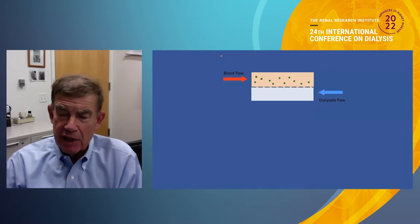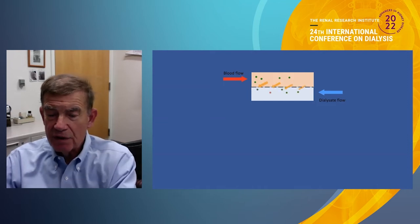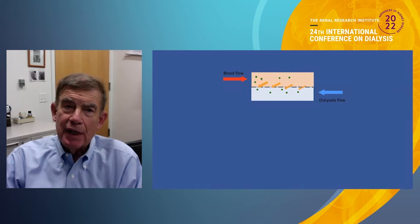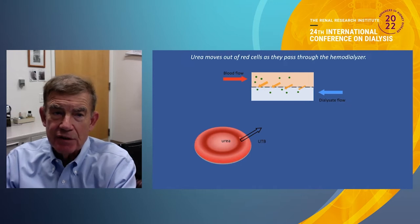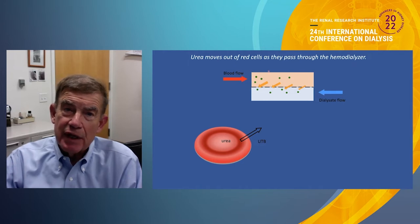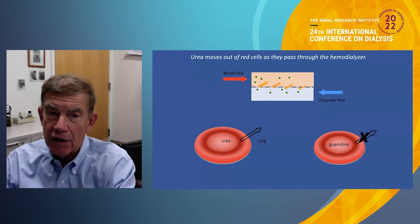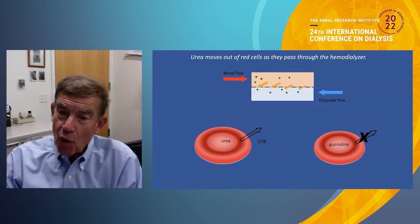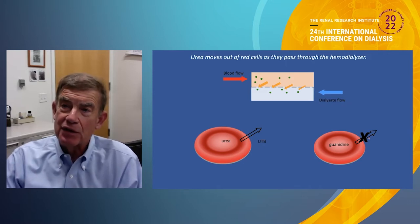Think of the blood as flowing through the dialyzer with solutes — the little green dots — and dialysate flowing in the opposite direction, with the solute diffusing into the dialysate. Urea is removed uniquely among uremic solutes, not only from the plasma, but actually from the red cells, via a urea transporter. So urea is removed from almost the entire water volume. Other uremic solutes like creatinine and guanidine are inside red cells — guanidine's concentration in the red cell is actually higher than in plasma — but guanidine doesn't come out of the red cell as blood flows through the dialyzer.